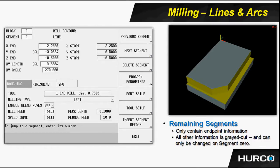We add segments by selecting the next segment button, which advances to the next segment, and then we select the type — a line, an arc, a blend arc, and so forth. Here we see segment one is a line and we've programmed the X endpoint. We didn't know the Y endpoint but we did know the angle. The Y end and XY length are both calculated values, so everything else was entered as a hard value. You'll notice tooling, speeds and feeds, and so forth are grayed out because they can only be set in segment zero.